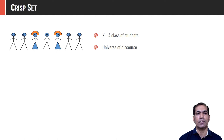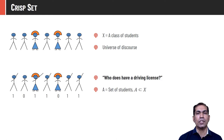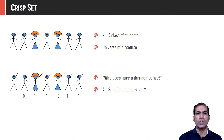If I ask students who owns a driving license, the student might have a license or not. Based on this characteristic, the characteristic function χ will assign value 1 or 0 to each student. All students who have a driving license will be assigned membership value 1, and the rest will be assigned value 0.